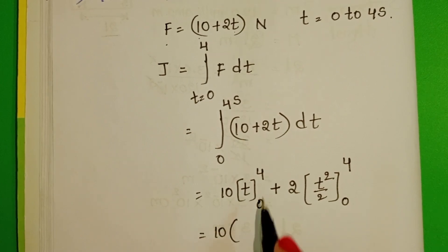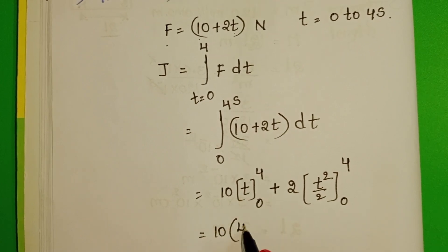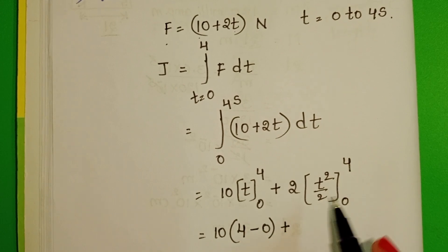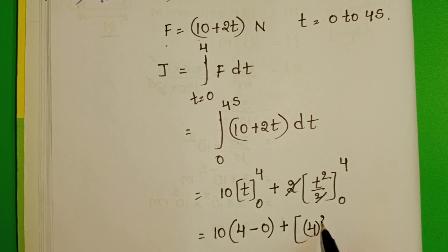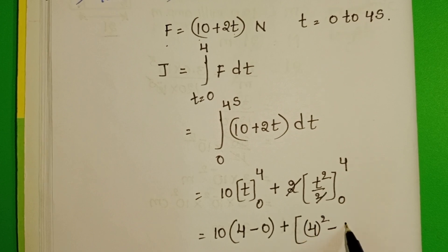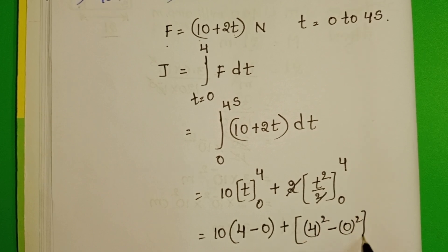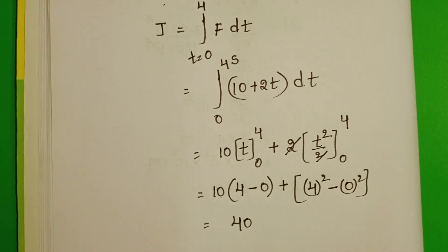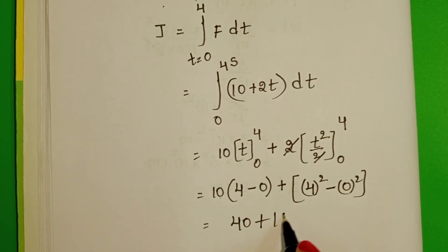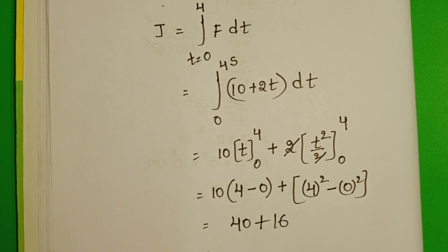Substituting limits: 10 into upper limit 4 minus lower limit 0. The 2 and 2 cancel, giving upper limit 4 squared minus 0 squared. This gives 10 into 4, which is 40, plus 16, equaling 56.